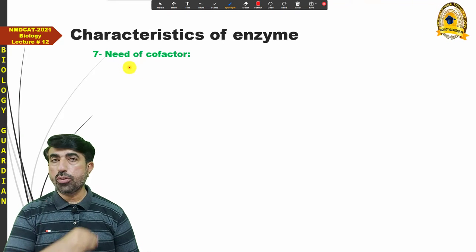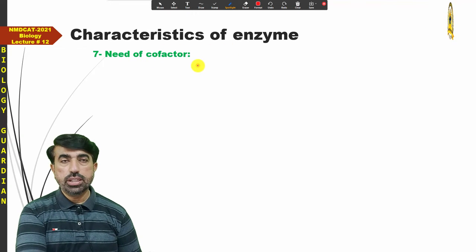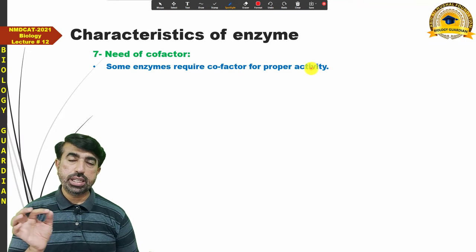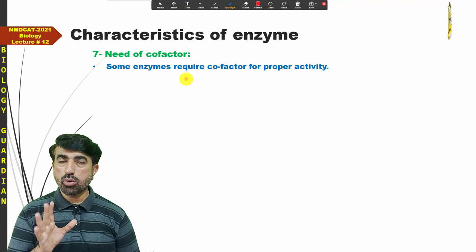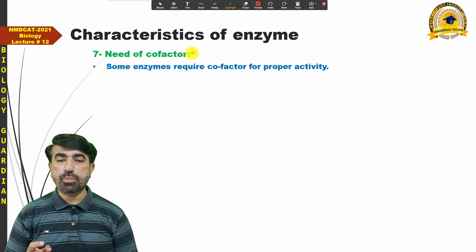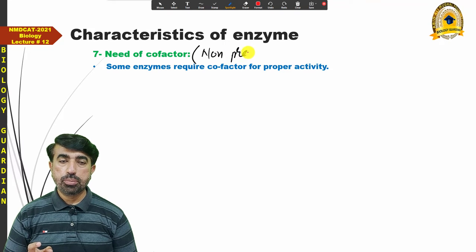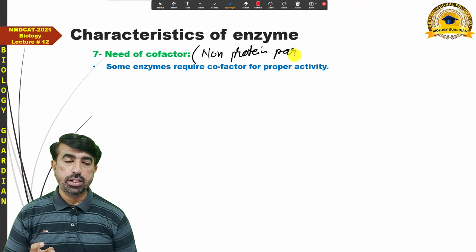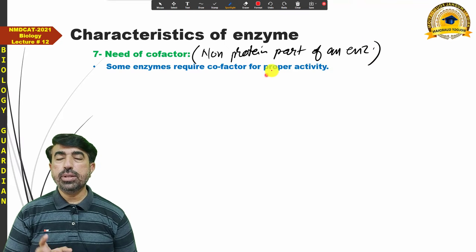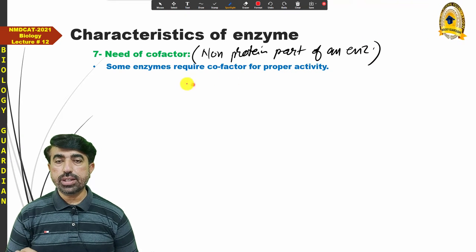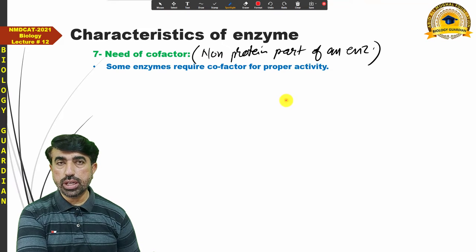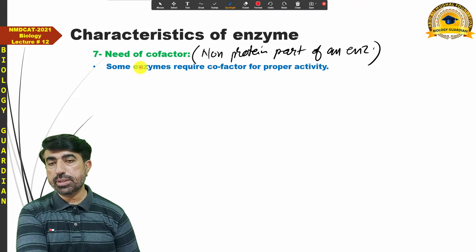An important property of enzymes is the need for co-factors. Some enzymes require a co-factor to perform their activity — they are dependent on it. A co-factor is the non-protein part of an enzyme. The non-protein part of an enzyme is called a co-factor. Generally enzymes are protein in nature, but certain enzymes also require some non-protein parts.